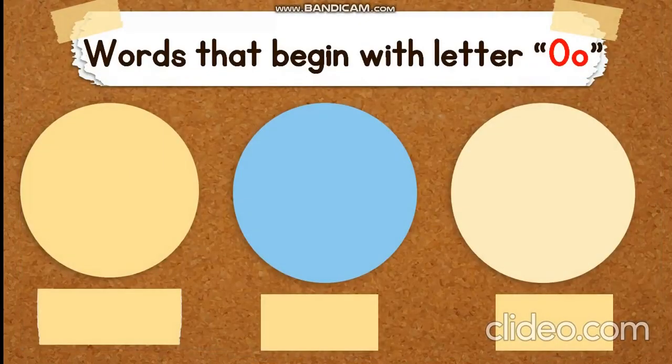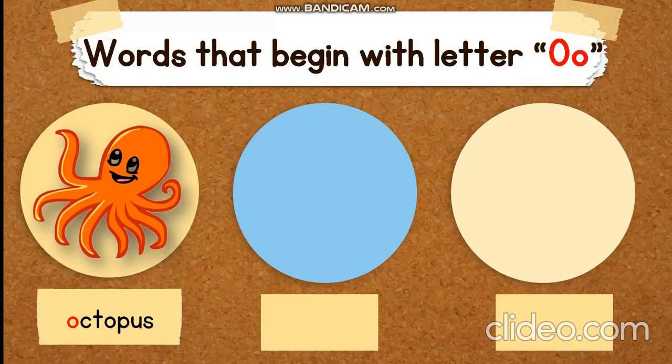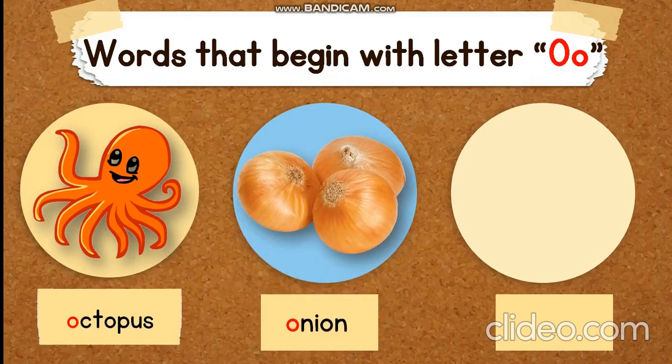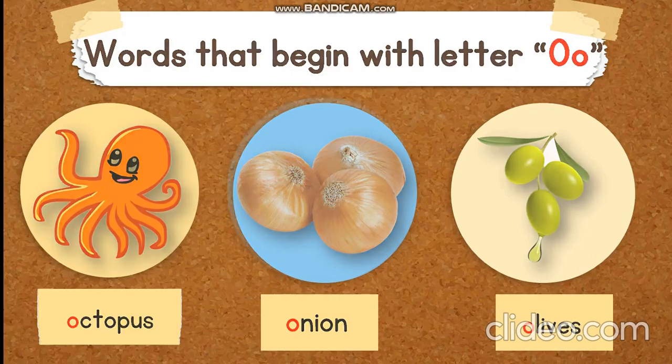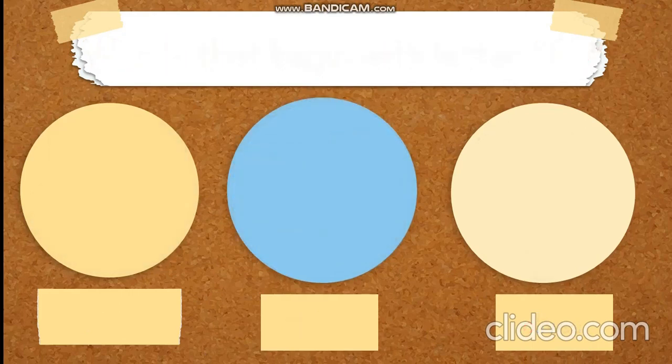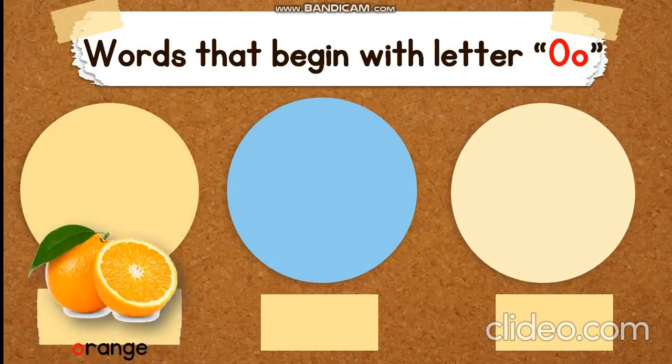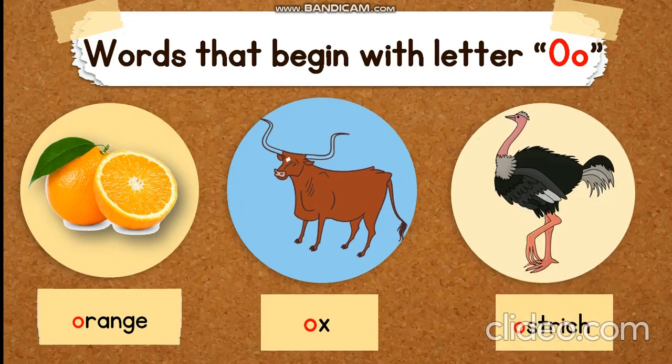Words that begin with letter O: an octopus, an onion, an olive, an orange, an ox, an ostrich.